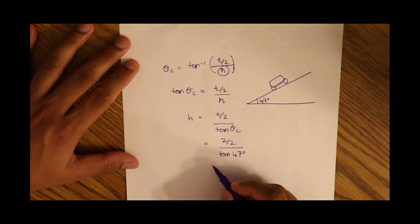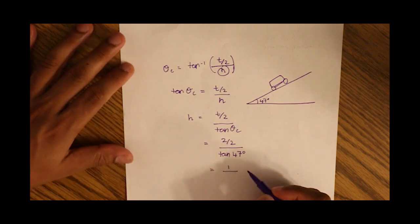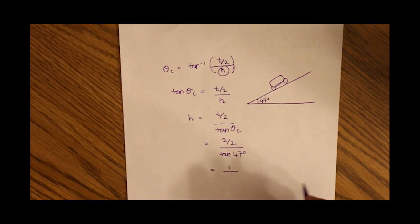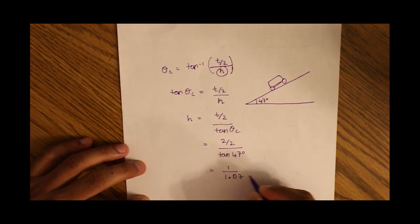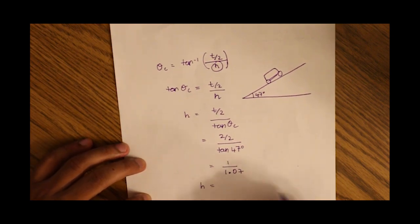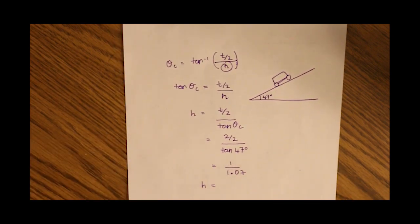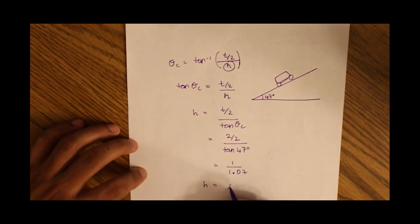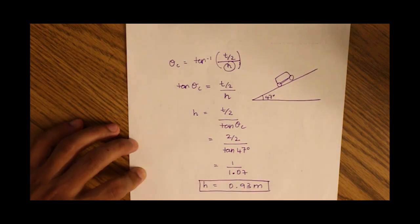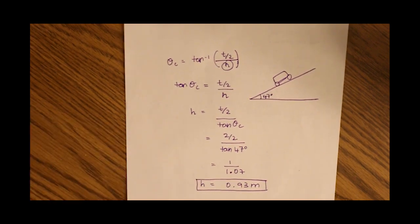So that is a value of one divided by, what is tan of 47? 1.07. And so our height till our center of gravity is one divided by 1.07, which is 0.93 meters. Which is what was asked of us in the question.